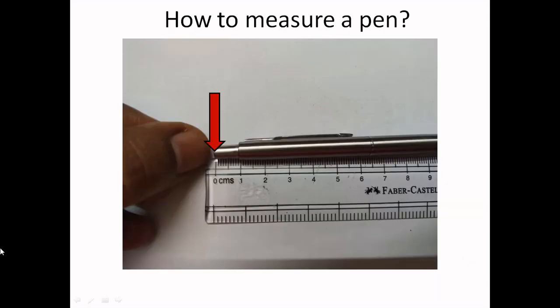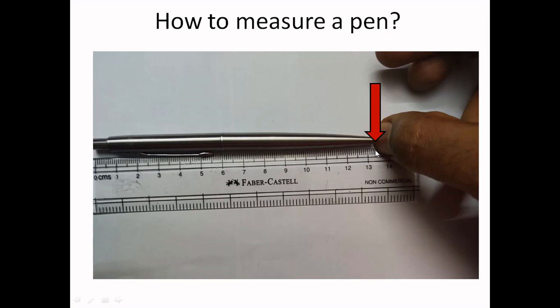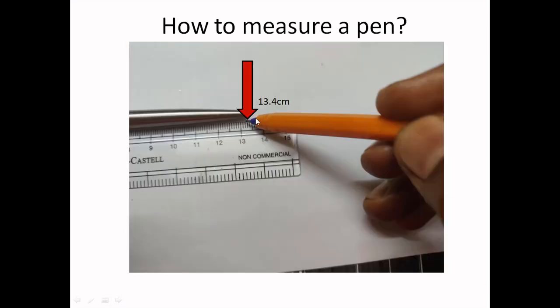The same way, how to measure the pen? The starting point is 0 on the scale and the ending point is 13.4 centimeters on the scale. So this is the way how to measure a pen when using a centimeter scale.